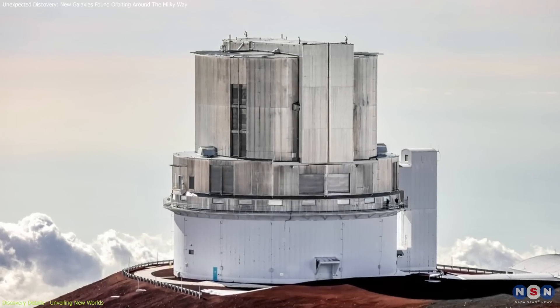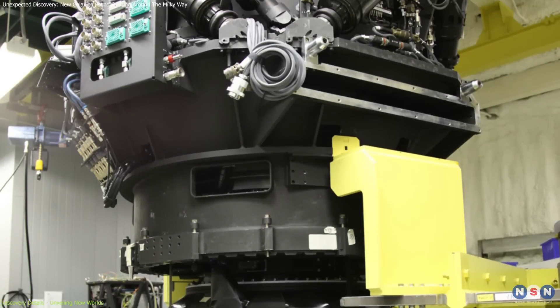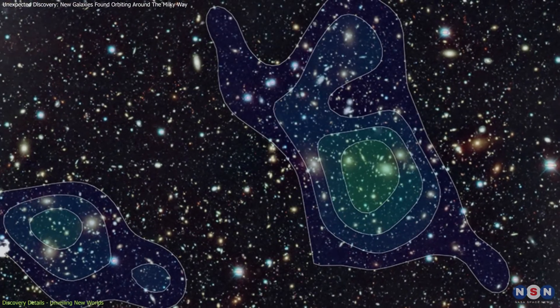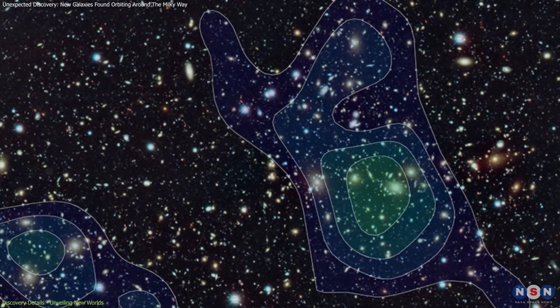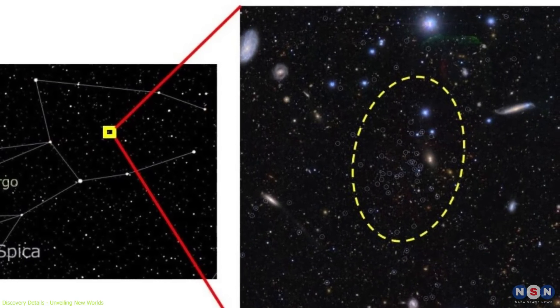This telescope, positioned at the top of the serene Mauna Kea in Hawaii, is equipped with the HyperSuprime Cam. It's a wide-field camera that captures deep images of the sky, which played a crucial role in detecting these two distant and faint galaxies.